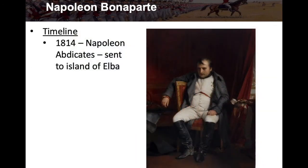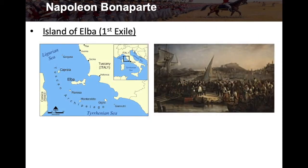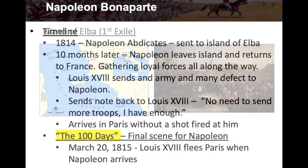In 1814, back in Europe, Napoleon abdicated the throne — he quit, gave it up. He was sent to the island of Elba in exile. Here's a map: there's the boot of Italy, and Elba is right off the coast of Italy. He was sent there and was in exile, but only for a short time.